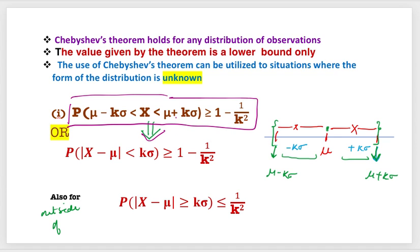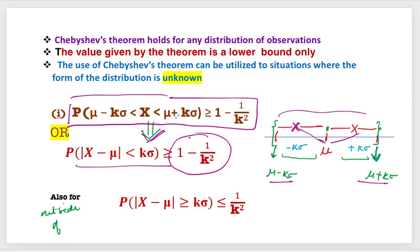This inequality can also be written in another form using the absolute value: the probability that |X minus mu| is less than k sigma is greater than or equal to 1 minus 1 upon k squared. This means the distance of the random variable X from its mean must be within k sigma. If x goes beyond k sigma — meaning it falls outside that interval — that corresponds to the outer portion of the data.